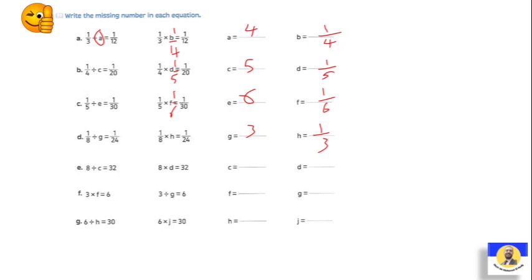8 divided by what equals 32? 8 divided by 1 over 4 equals 32 — so the missing number is 1 over 4. Next: 3 divided by what equals 6? 3 divided by 1 half equals 6. Next: 6 divided by what equals 30? 6 divided by 1 over 5 equals 30, so H is 1 over 5 and J is 5.